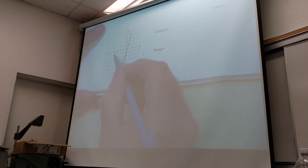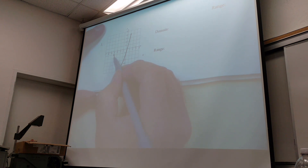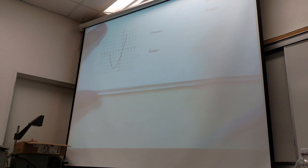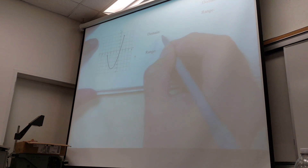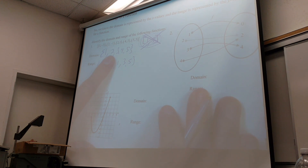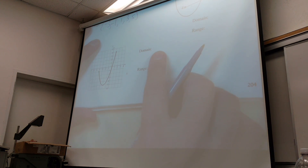Just because I put two dots doesn't mean there's only two points — there's an infinite number of points. In fact, between any two real numbers you can think of, there's an infinite number of numbers. So my domain — I do want to write these in interval notation, because then it includes everything. What's the lowest the domain would start at? Negative four. Up to one. The domain is all about x's.